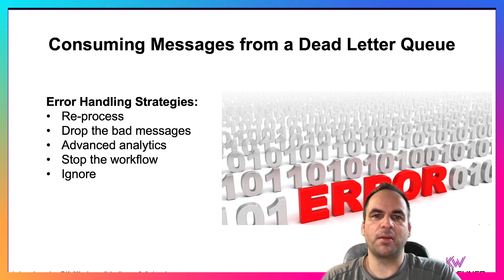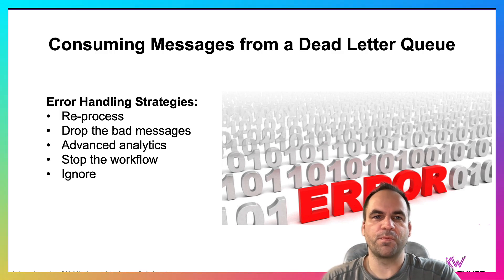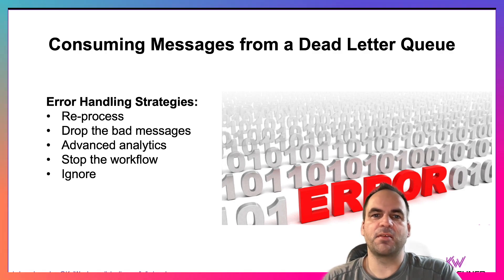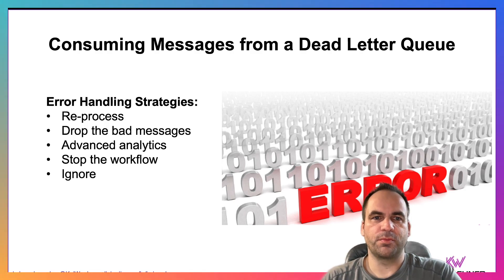Therefore there are other strategies, like dropping the bad messages — just not using them. You could do advanced analytics, which means you use another processing unit, ideally a stream processor like Kafka Streams or Apache Flink, because it can continuously process the data on the fly while it is in motion, instead of just storing it in another database or data lake. You can then make decisions based on that logic, or maybe even embed AI or machine learning into that workflow to improve the data quality, adjust the message, and then reprocess it. If it's a critical error, you might stop the workflow entirely. Or you might just ignore it. You can choose per business case which strategy you implement for error handling.